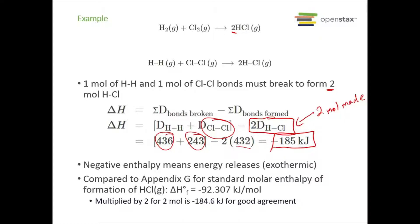If you go to appendix G, which has standard molar enthalpy — the delta H formation standard — you would see it is negative 92.307 kilojoules per mole for HCl. Since we have two moles, we multiply by two and get negative 184.6 kilojoules. Very similar to 185. So using this estimation process with bond energies, we get fairly close — good agreement.